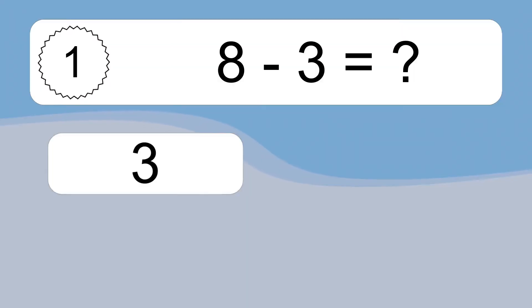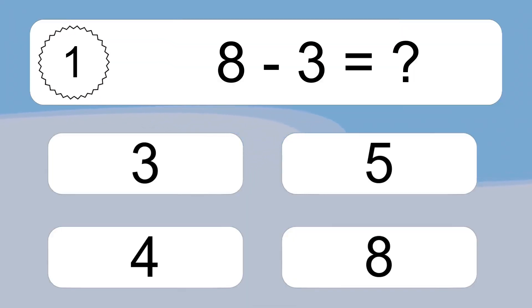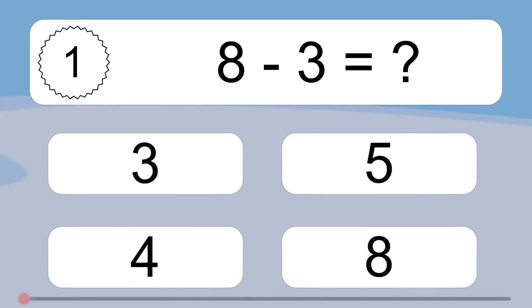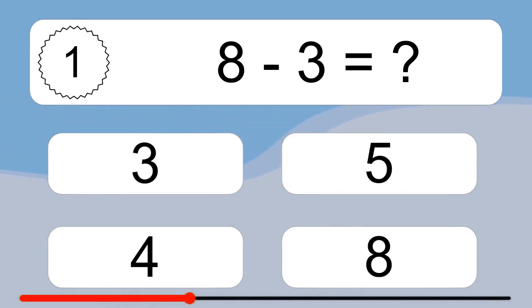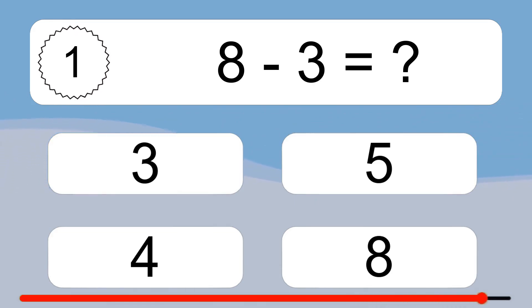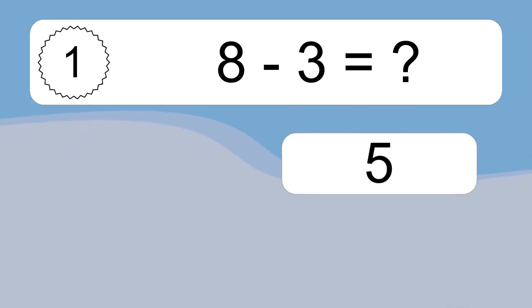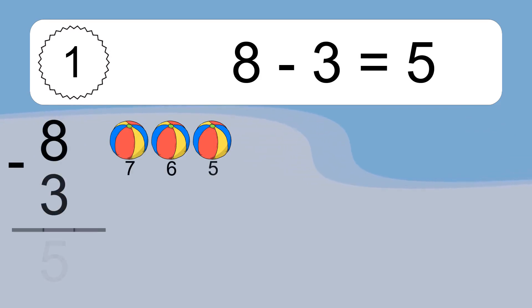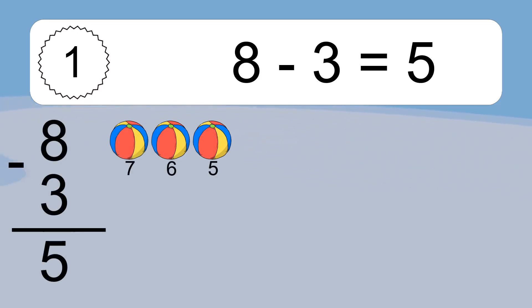8 minus 3 equals what? 8 minus 3 equals 5. Let's count it: 7, 6, 5.